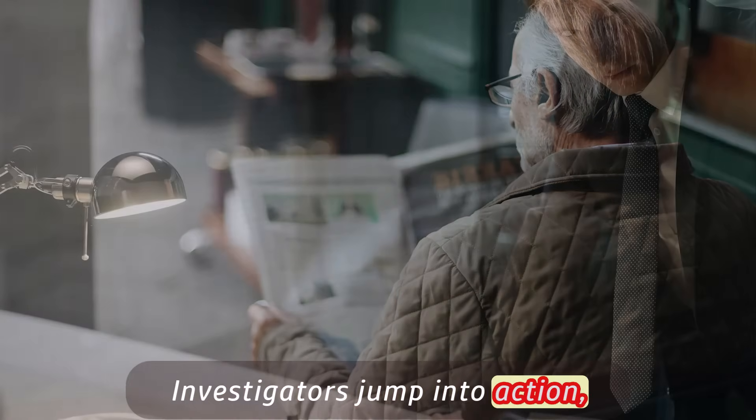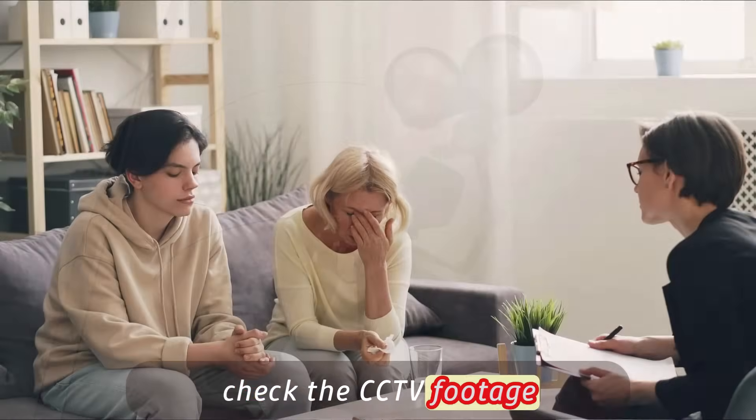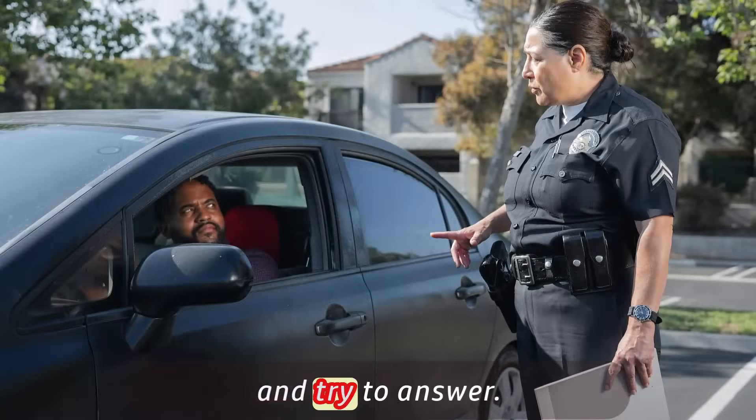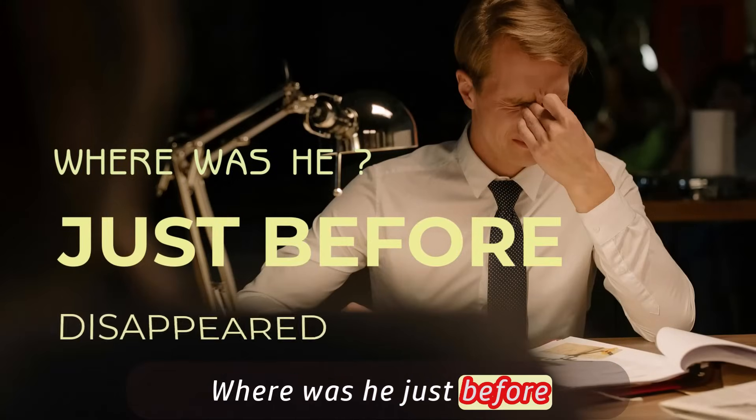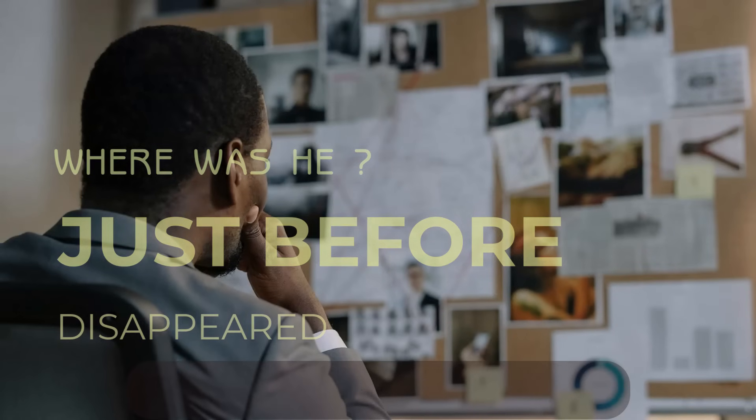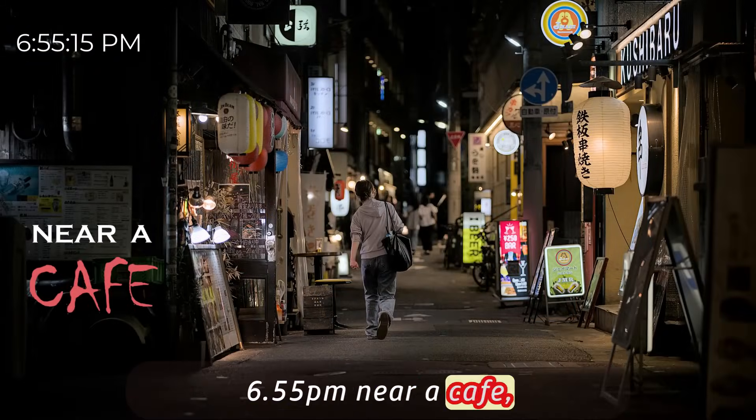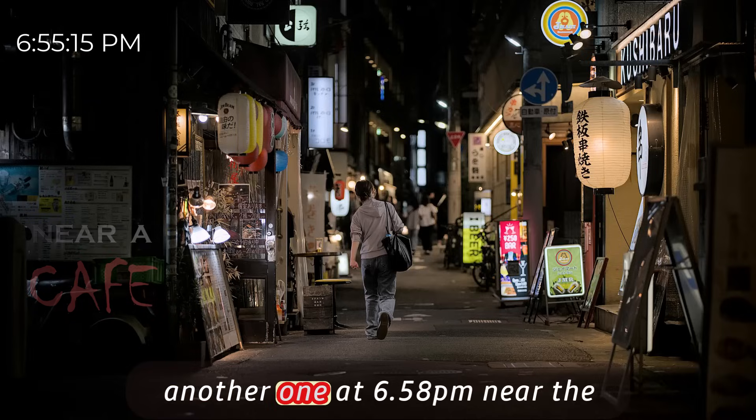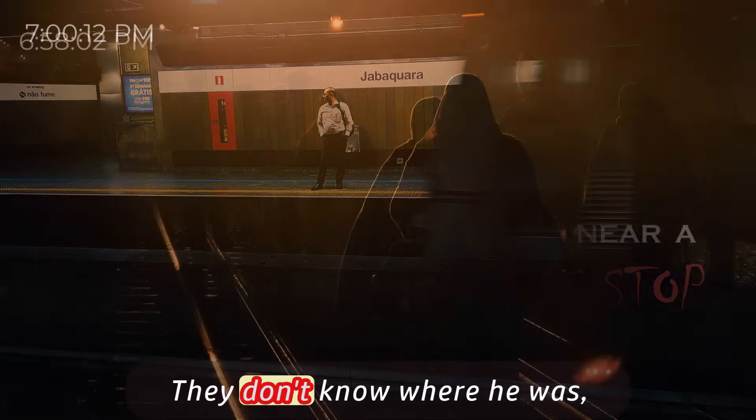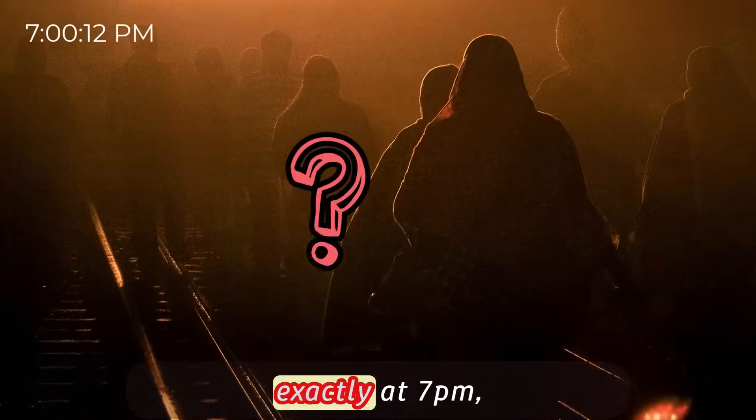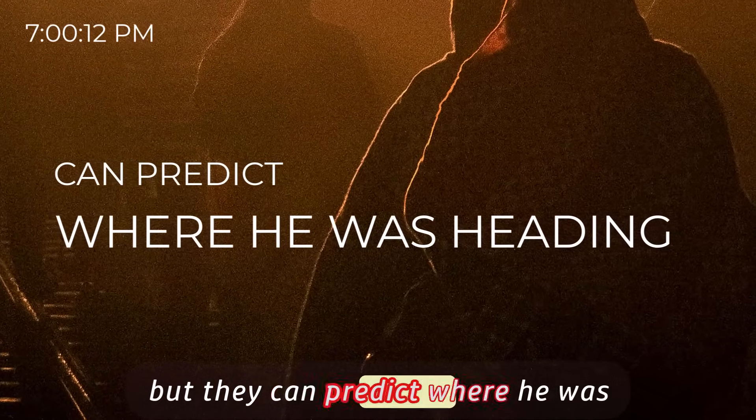Investigators jump into action, they talk to the people, check the CCTV footage and try to answer, where was he just before he disappeared. Maybe someone saw him at 6:55 p.m. near a cafe, another one at 6:58 p.m. near a bus stop. They don't know where he was exactly at 7 p.m., but they can predict where he was heading.